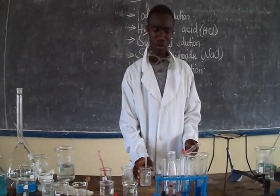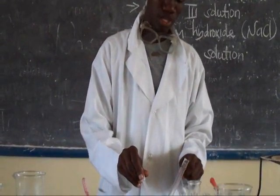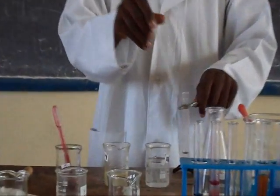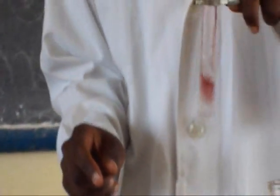Finally, we are going to test food sample H to check whether it contains lipids or not. We take 3 cm³ of the food sample and add a few drops of Sudan III. The observation is that there is no brick red layer formed above and the pale red layer is not formed. This means that food sample H does not contain lipids.